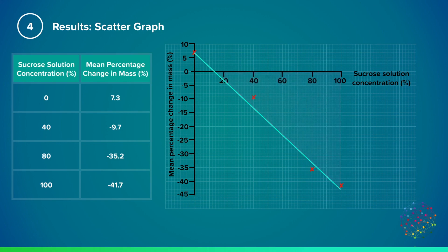Finally, we can use the graph to indicate the isotonic concentration, which is the solution where inside and outside the potato cells had the same concentration. Therefore, no excess water was lost or gained at this point.